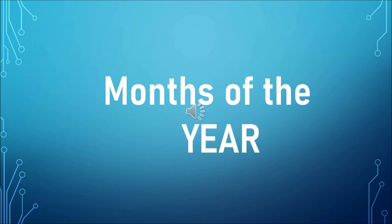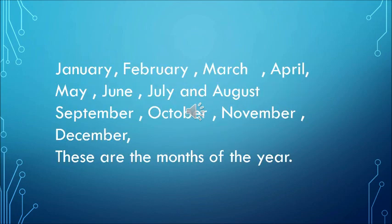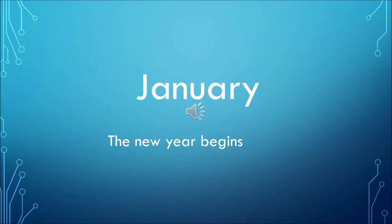So now in the second part we'll be doing the rhymes. We know, children, that there are 12 months in a year. So first we'll begin with the first rhyme: January, February, March, April, May, June, July, August, September, October, November, December — these are the months of the year!